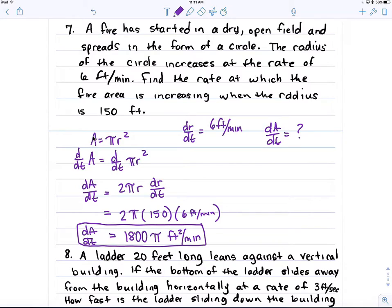We also know that they're working with areas. So we start with our area formula. Differentiate with respect to time, and that gives us 2πr dr/dt.